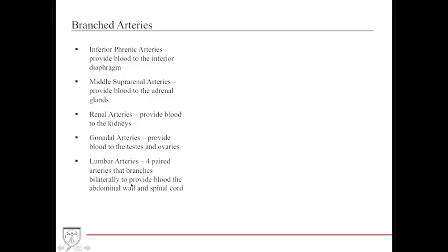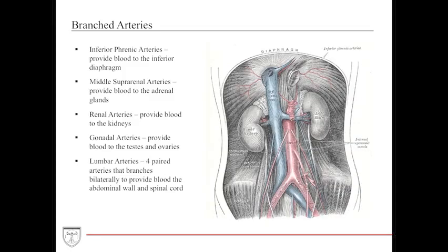The paired branches include the inferior phrenic, which provides blood to the inferior diaphragm; the middle suprarenal to the adrenals; the renal arteries to the kidneys; the gonadals, which descend to the testes and ovaries — because the testes and ovaries embryologically originate in the abdominal cavity and descend down; and finally the lumbar arteries, which provide blood to the anterior abdominal wall and the spinal cord.